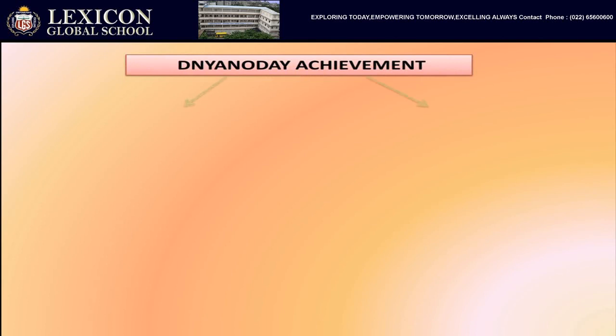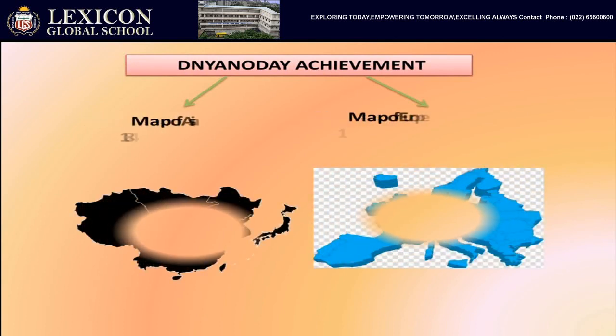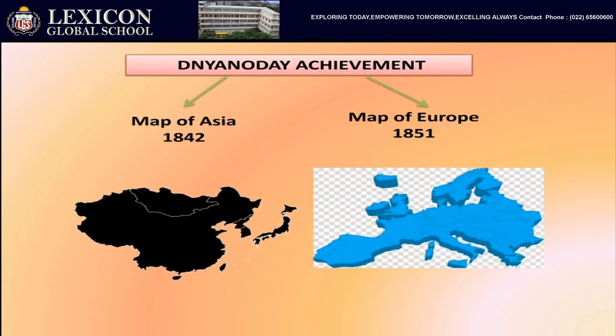Let us now learn about Dhyanoday. Dhyanoday had a lot of achievements. It printed the map of Asia in 1842 and the map of Europe in the year 1851. The honour of printing and illustration in an Indian newspaper for the first time goes to Dhyanoday.